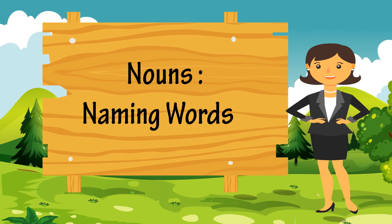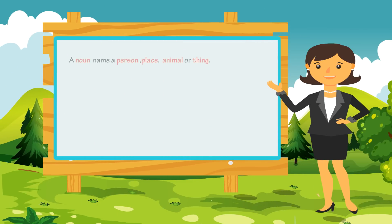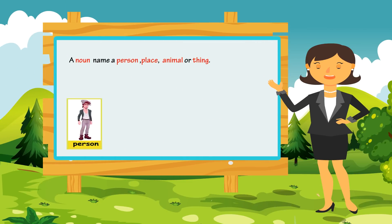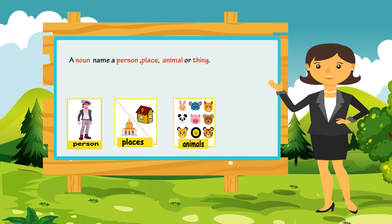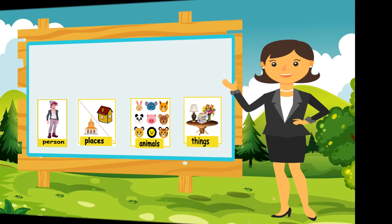Nouns. Naming words. A noun names a person, place, animal, or thing. All naming words are nouns.